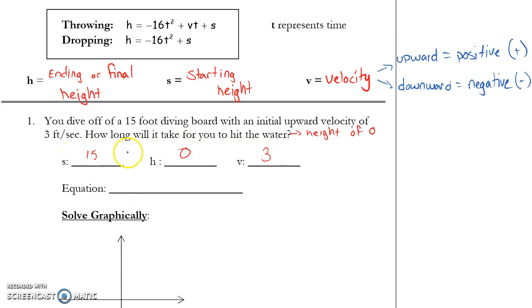So one of the major things in this unit, in this section, is going to be being able to pick out starting height, ending height, and velocity. Once we have those, we plug them into our equation. I know that I have a throwing problem here because I've been given a velocity. So instead of h, I use zero equals negative 16t squared. And instead of plus v, it's plus 3t. And then instead of plus s, it's plus 15.